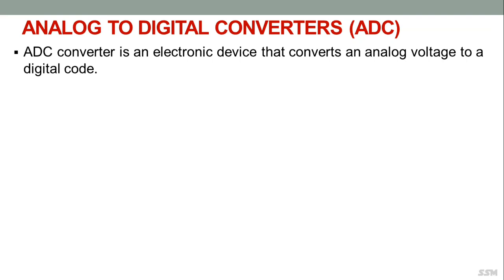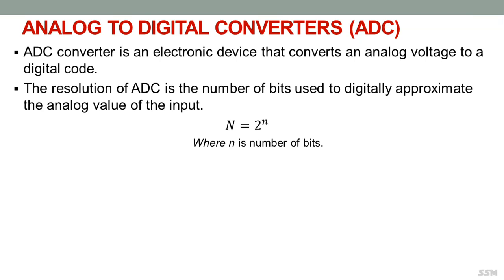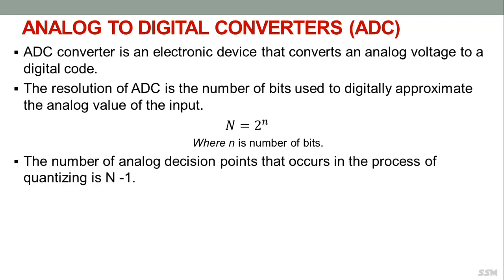The analog to digital converter is an electronic device that converts an analog voltage to a digital code. The output of an ADC can be directly interfaced to digital devices such as microcontrollers and computers. The resolution of an ADC is the number of bits used to digitally approximate the analog input value. The number of possible output states N equals 2 to the power n, where n is the number of bits.